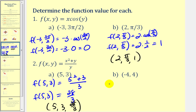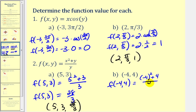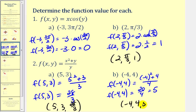Let's look at one more: f of negative 4, 4. We have to be careful with our signs here. We're going to square negative 4, getting 16, then add 4, divided by positive 4. So we have 16 plus 4, that's 20, divided by 4, which gives us 5. The ordered triple would be negative 4, 4, 5, which represents one point on this surface.